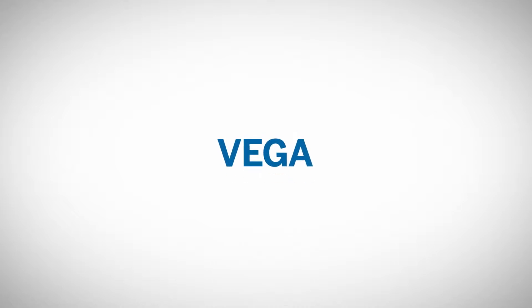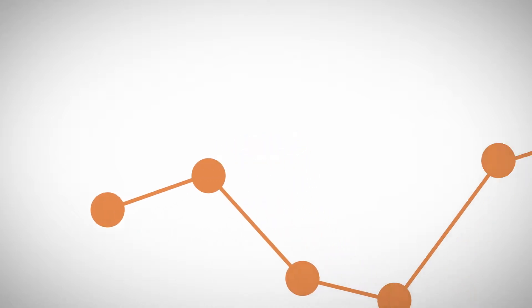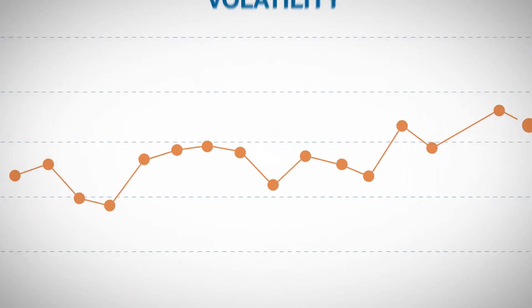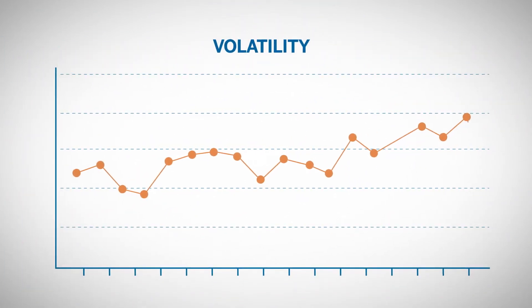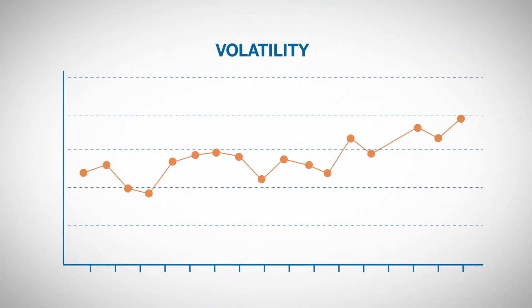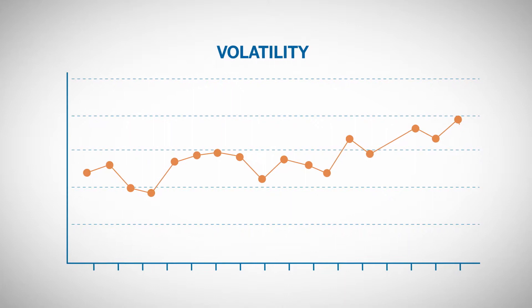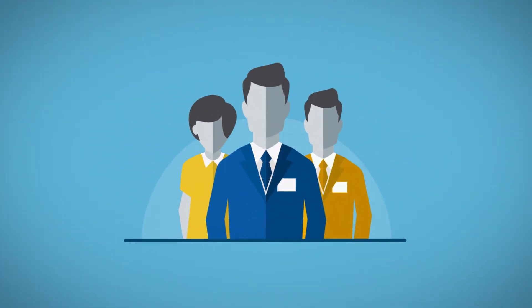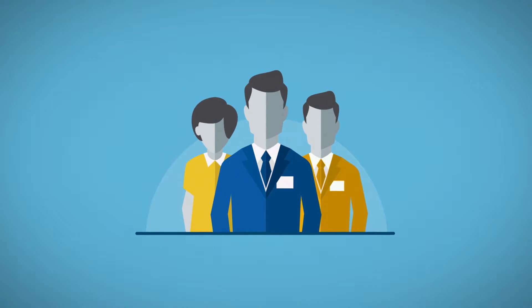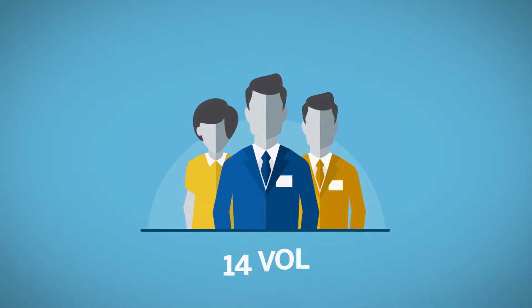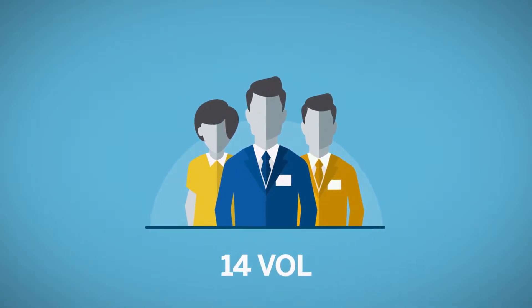Let's look at Vega. Vega is the Greek that measures an option's sensitivity to implied volatility. It is the change in the option's price for a one-point change in implied volatility. Traders usually refer to the volatility without the decimal point. For example, volatility at 14% would commonly be referred to as vol at 14.